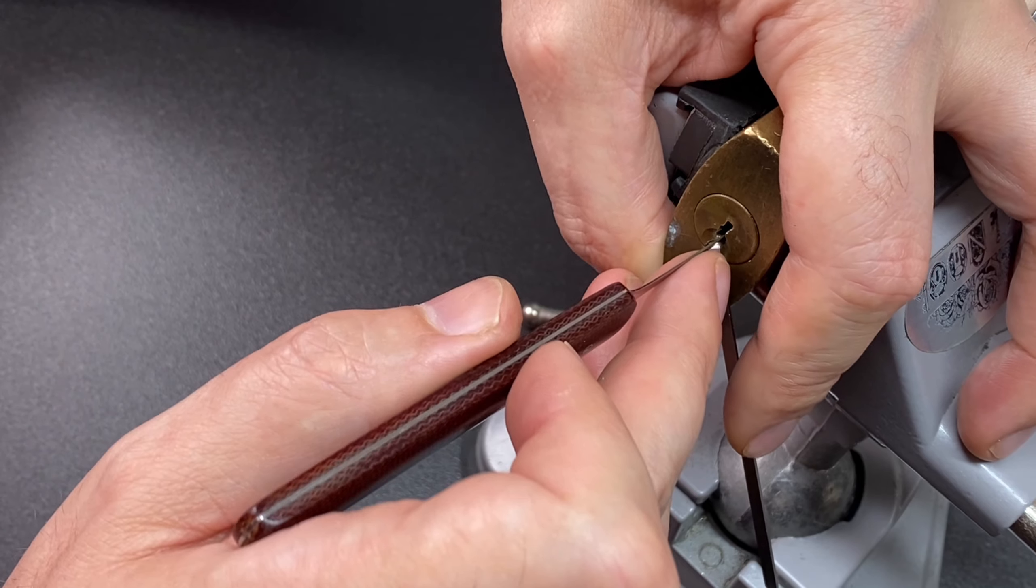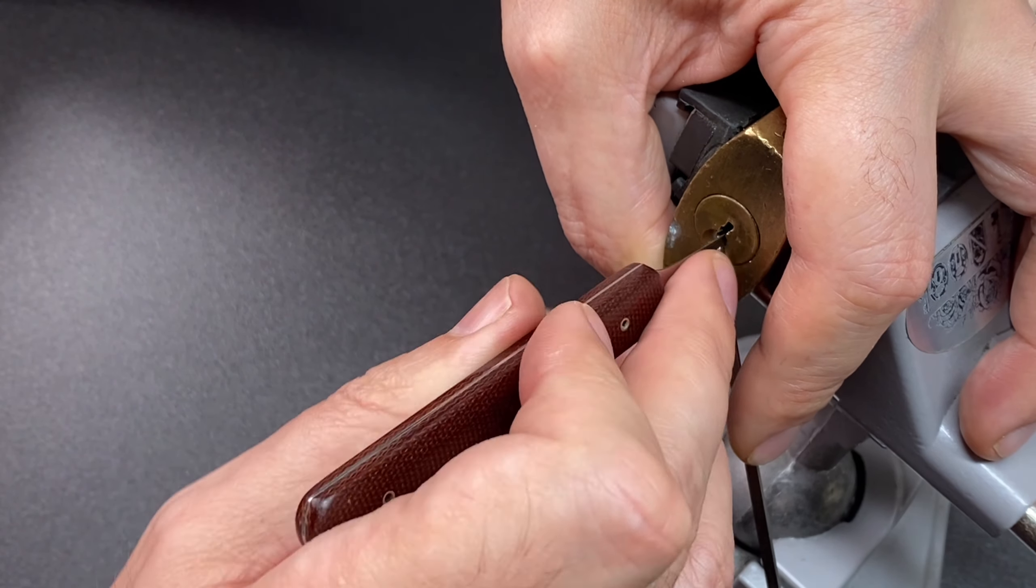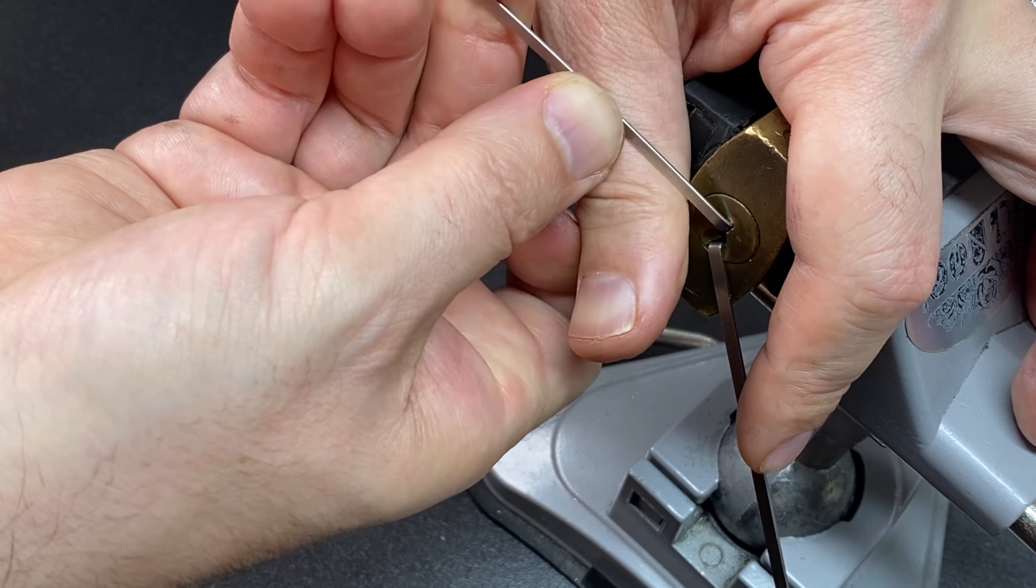Little click on three, I think there. No, not feeling anything there. Just swap back over to top of the keyway. Just any old turner will do like that.